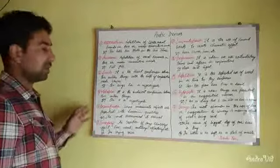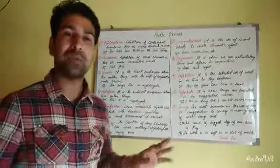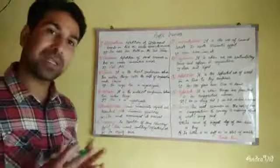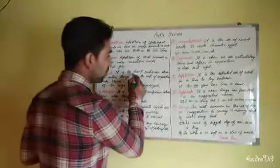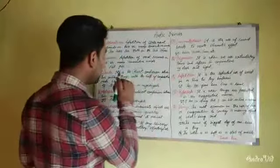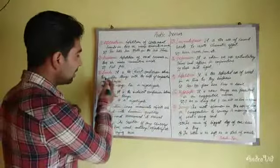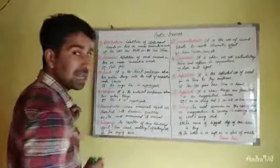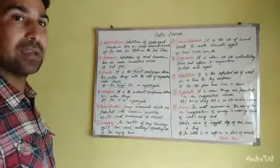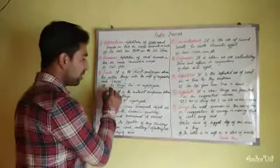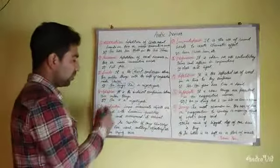Simile is when two unlike things — things that are not like each other in any part — are compared with the help of comparative words like 'like' or 'as.' We have a direct comparison between two unlike things. For example: 'She sings like a nightingale.' She and a nightingale are not alike, but we directly compare their singing, so it is a simile.